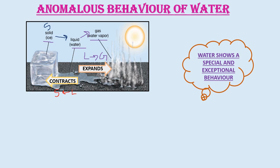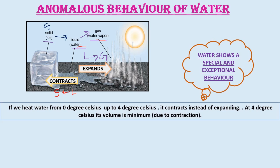But water shows a special and exceptional behavior. When water is converted to gaseous phase, it shows a special kind of behavior. If we heat water from 0 degrees Celsius to 4 degrees Celsius — the ice is completely converted into water — and still we provide heat, when we heat water from 0 degrees Celsius to 4 degrees Celsius, it contracts instead of expanding. We have seen that when there is a conversion of liquid phase to vapor phase, expansion takes place. But here, instead of expanding, it will contract.